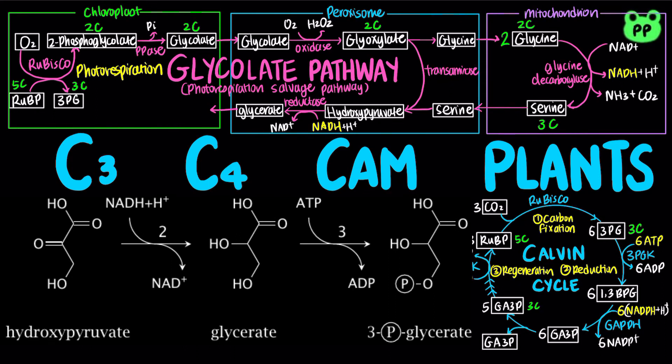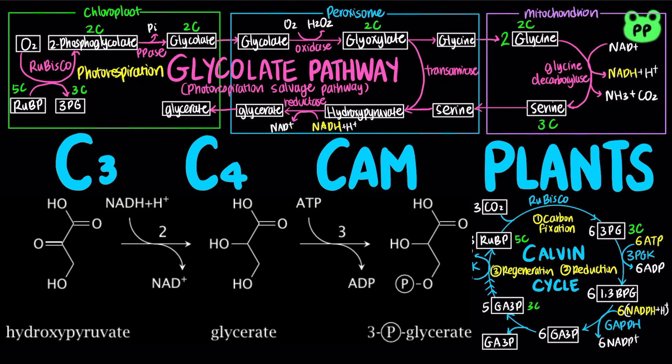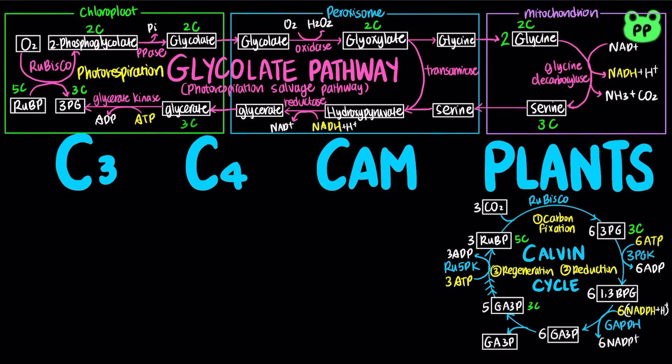Glycerate is then transported back to the chloroplast stroma, where it is reconverted to 3-phosphoglycerate and ribulose-1,5-bisphosphate through the Calvin cycle. The net reaction of the glycolate salvage pathway consumes oxygen and produces carbon dioxide from ribulose-1,5-bisphosphate. Instead of synthesizing carbohydrate, it wastes the carbon atoms from ribulose-1,5-bisphosphate as carbon dioxide, while spending an ATP molecule in the process.